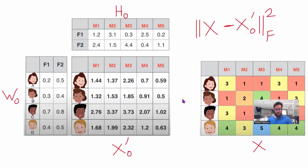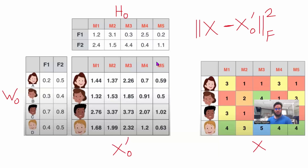The main question is: how do we get those two matrices — the preferences of different people, and the genre classification of different movies? That is where matrix factorization comes into play. Suppose we assume there are two intrinsic features, F1 and F2. Previously I said F1 is comedy and F2 is action, but we actually don't know that in advance. We just know there are some hidden intrinsic factors based on which people decide their ratings on movies.